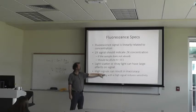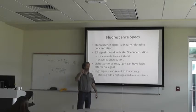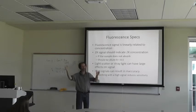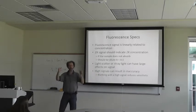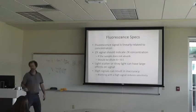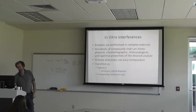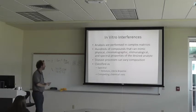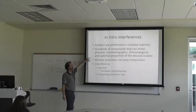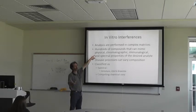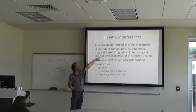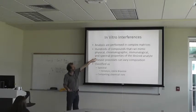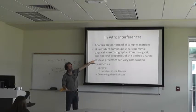If you have a really high signal and your blank has a really high signal too, the difference between the two isn't going to be that great, so it reduces sensitivity. In vitro interferences: analyses are performed in complex matrices — that's the substance like plasma or urine. You have hundreds of compounds that can mimic the physical, chromatographic, immunological, and spectral properties of the analyte. Disease processes can vary composition also.